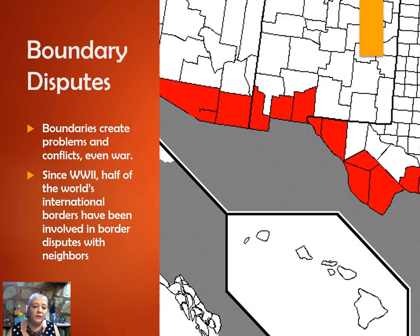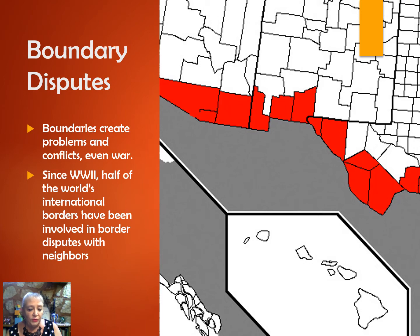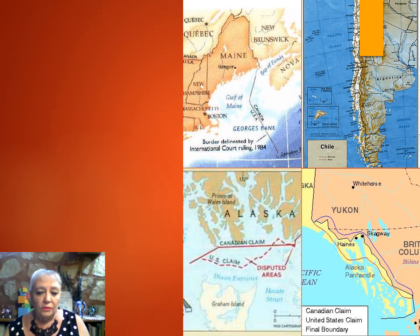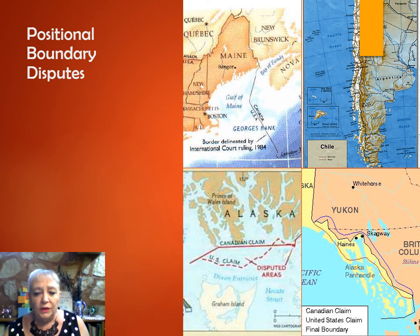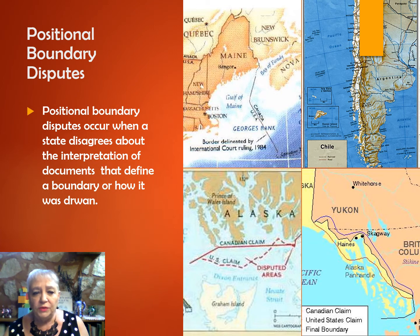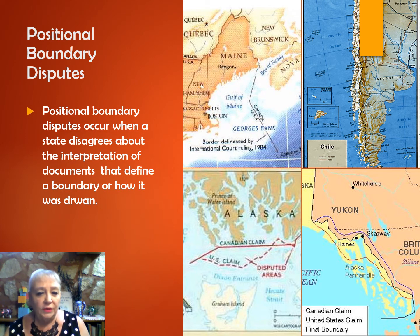There is no doubt that boundaries can oftentimes create disputes, problems, conflicts, and even war. There are several different types of reasons why boundary disputes come about. Since World War Two, half of the world's international borders have been involved in border disputes with their neighbors. Let's look at a couple of these boundary disputes — there are four major ones. The first is the positional boundary dispute, which occurs along the border when two states are opposed to the interpretation of the documents that define their particular boundary. The most common cause is the presence of some kind of ambiguous phrase in the delimitation of a boundary that has never been demarcated.